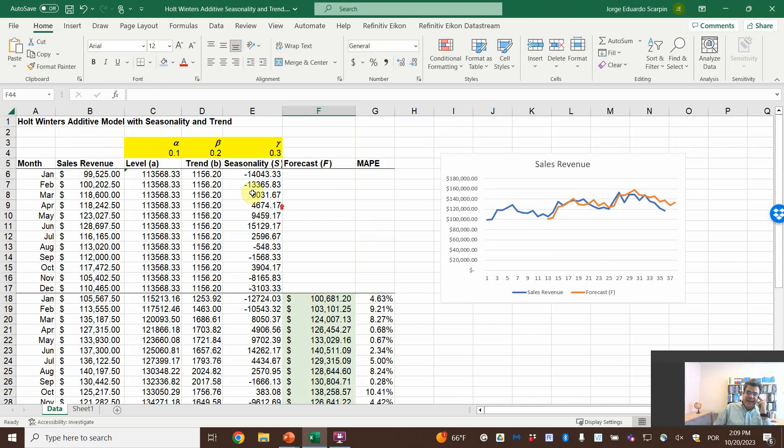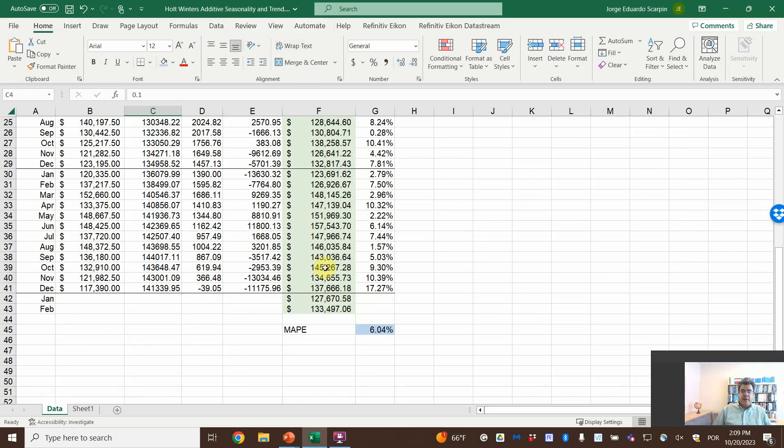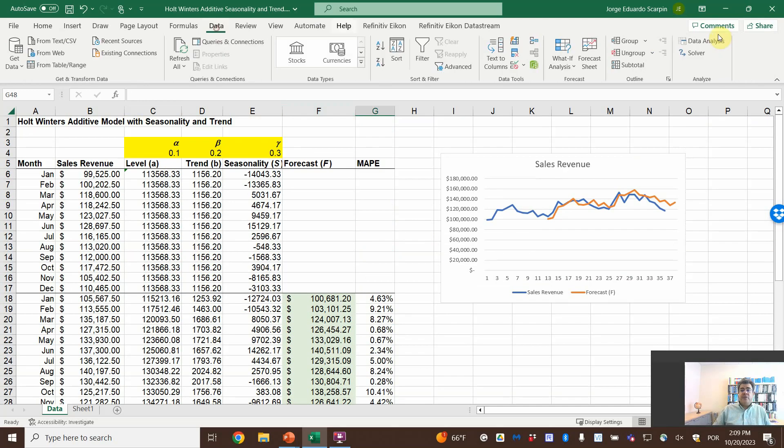However, are these the best alpha, beta, and epsilon? Don't know, probably not, because I add these randomly. So how do we find the optimal number? So make 6.04. So let me type it here, because it will be changing later. How do we do that? We do that using solver.